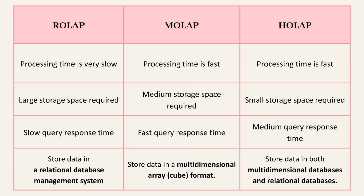In multidimensional OLAP, there is a fast query response time and data is stored in a multidimensional array cube format. In hybrid OLAP, it has a medium query response time and stores data in both a multidimensional database and a relational database.